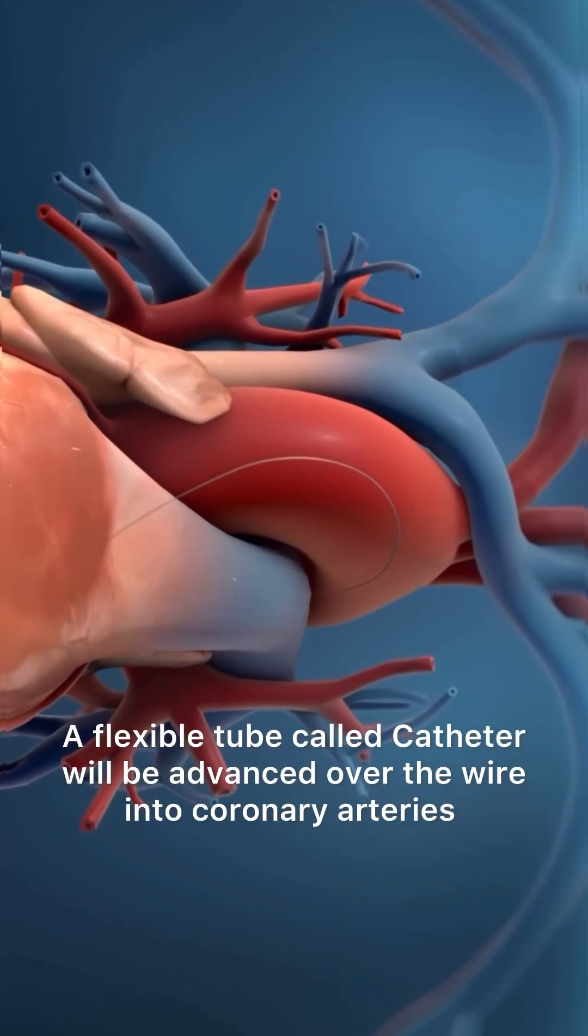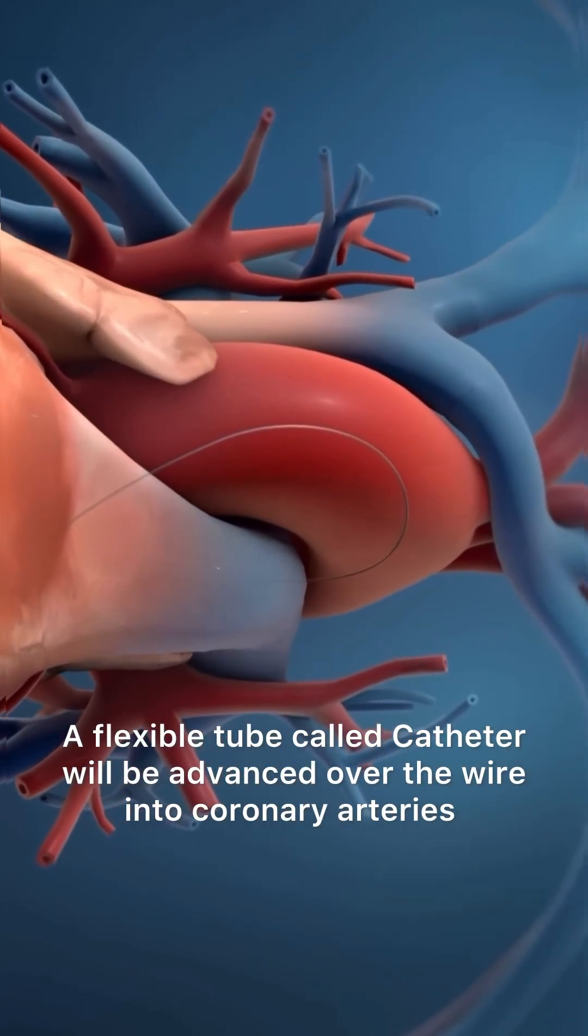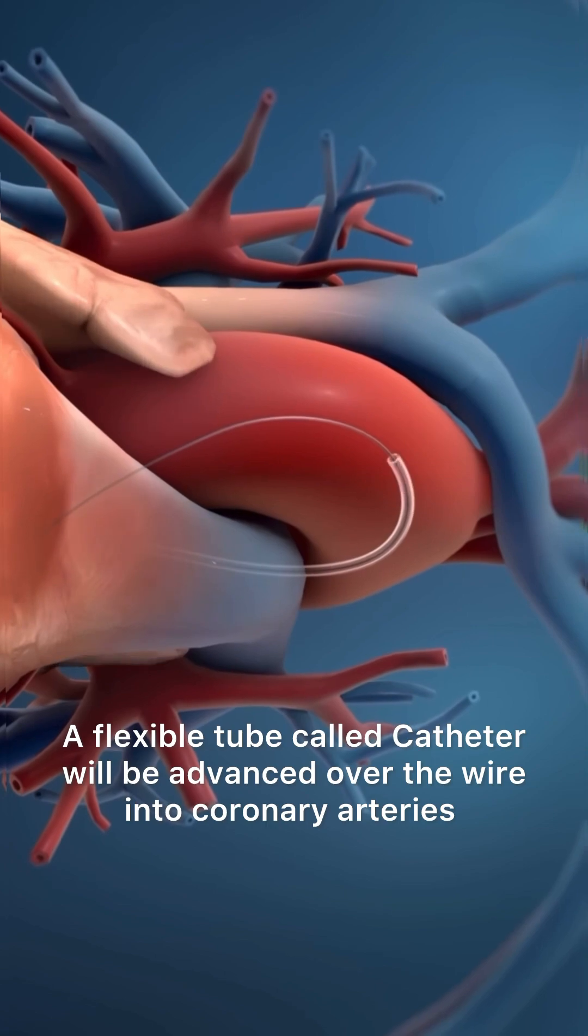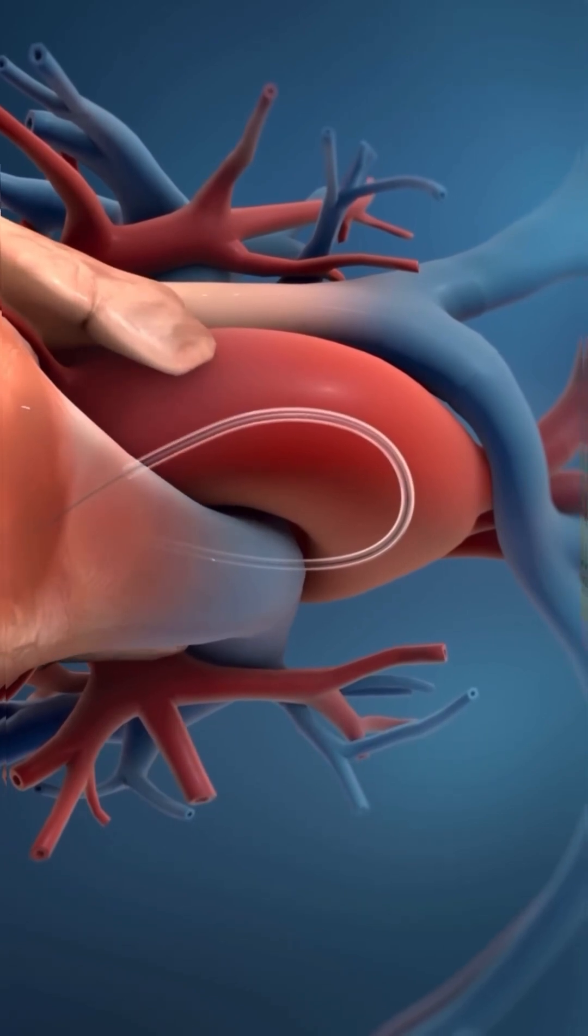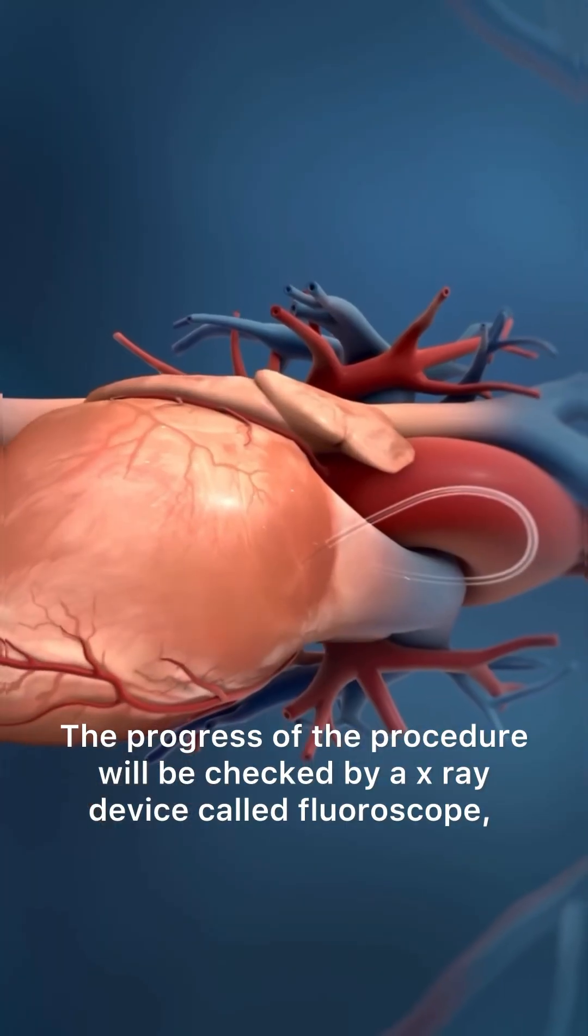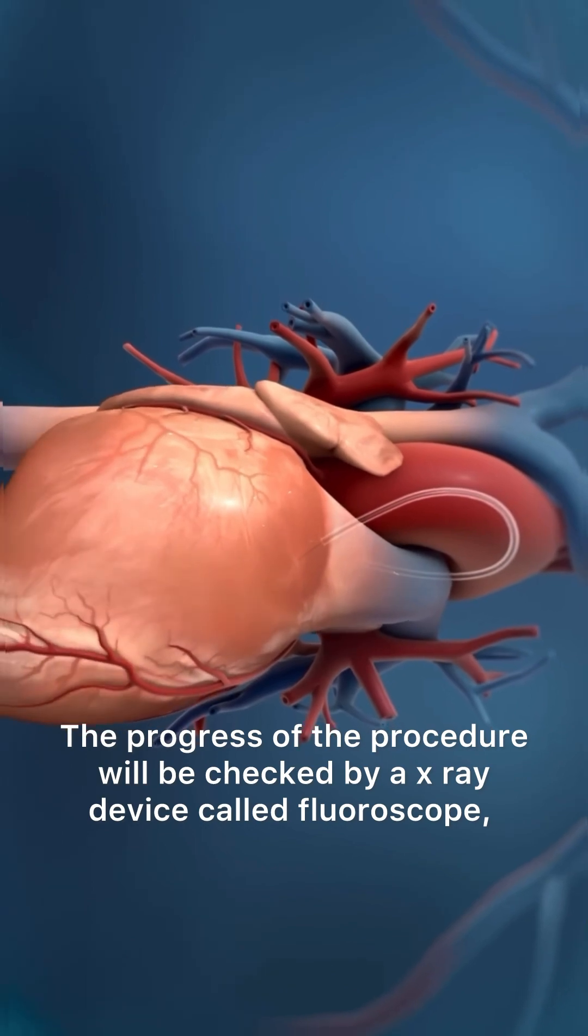A flexible tube called a catheter will be advanced over the wire into the coronary arteries. The progress of the procedure will be checked by an X-ray device called a fluoroscope.